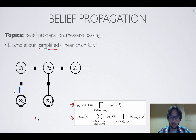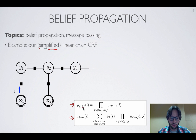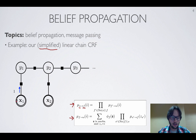First, let's consider the message sent from x1 to its factor. A message from a variable node to a factor node should be the product of all messages the variable node received from other factors except F. In this case, x1 is only involved in one factor, so there are no other messages; the product of nothing is set to one by definition.